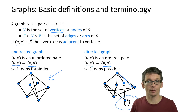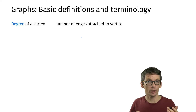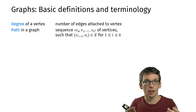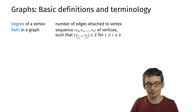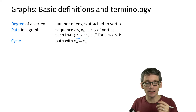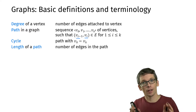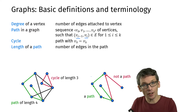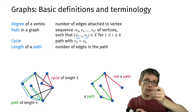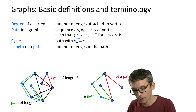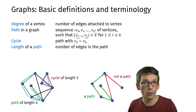Let's look at some more basic terminology. The degree of a vertex is the number of edges attached to that vertex. A path is a sequence of vertices such that there is always an edge from one vertex to the next — from v0 to v1, v1 to v2, and so on. A cycle is a path that starts and ends at the same vertex. The length of a path is the number of edges on that path. In the undirected graph example, the green path has length 4, and the red edges form a cycle of length 3.